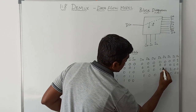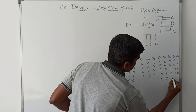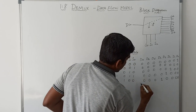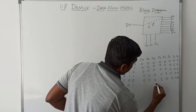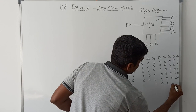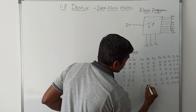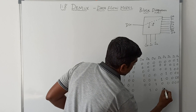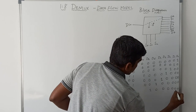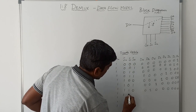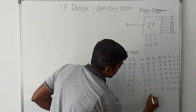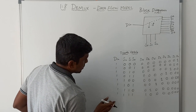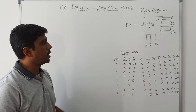S2=1, S1=0, S0=0: D4=1, remaining bits go to 0. S2=1, S1=0, S0=1: D5=1, remaining bits go to 0. S2=1, S1=1, S0=0: D6=1, remaining bits go to 0. S2=1, S1=1, S0=1: D7=1, remaining bits go to 0. This is the truth table for the DMUX.